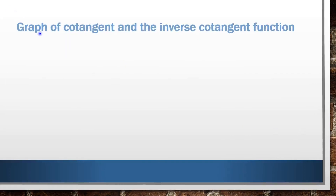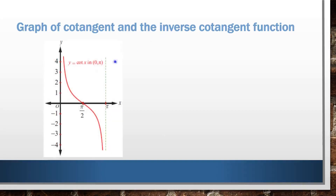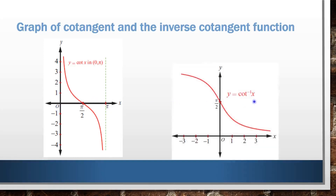Next we are going to see the graph of cotangent and the inverse cotangent function. Look at this graph. This is the graph of cot x in the open interval (0, π). The curve passes through π/2. The domain is 0 to π. For the inverse cotangent function, the domain is changed into the codomain, so the codomain interval is 0 to π, and the graph passes through π/2 on the y-axis.